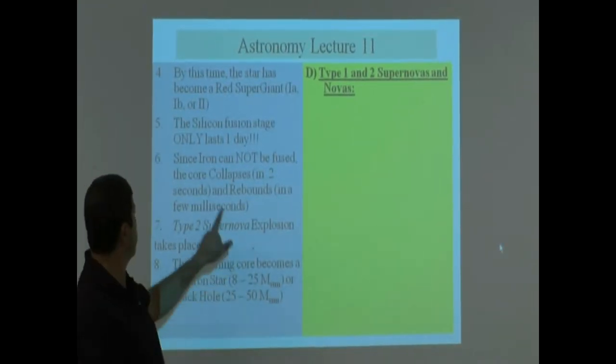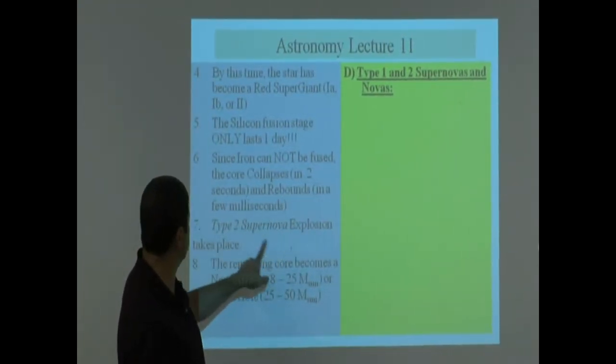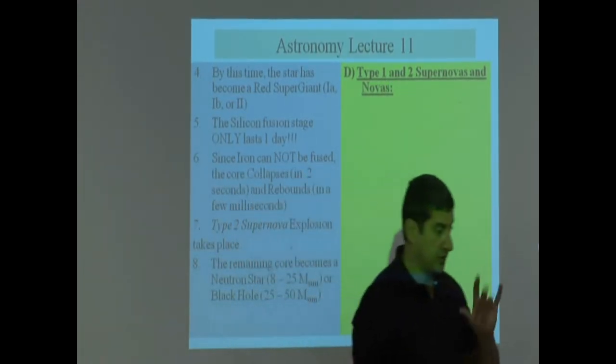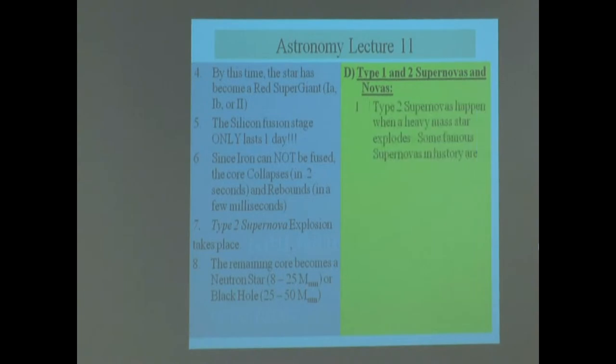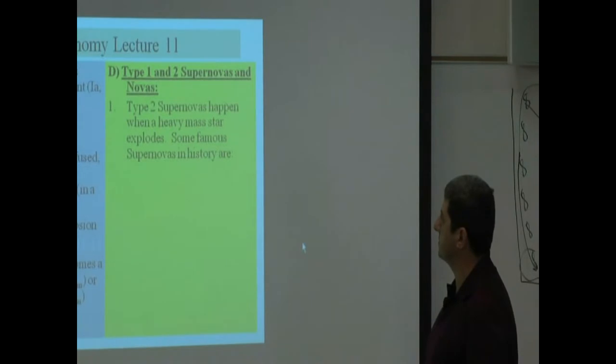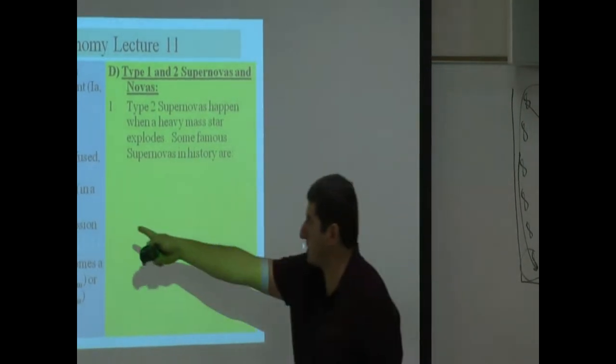Okay, now let's compare. Remember I told you this is called Type 2 supernova. What is a Type 1 supernova? So compare them. Type 2 supernovas happen when a heavy mass star explodes, which is what we just talked about.